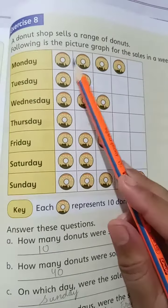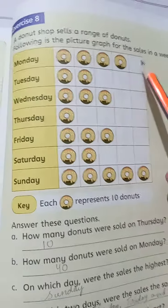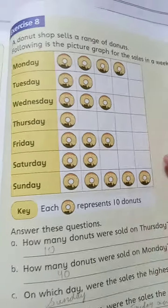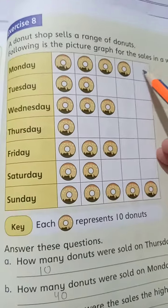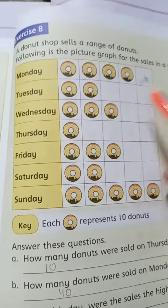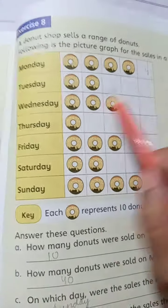Monday — let's count how many: 1, 2, 3, 4. So Monday has 4 donuts.